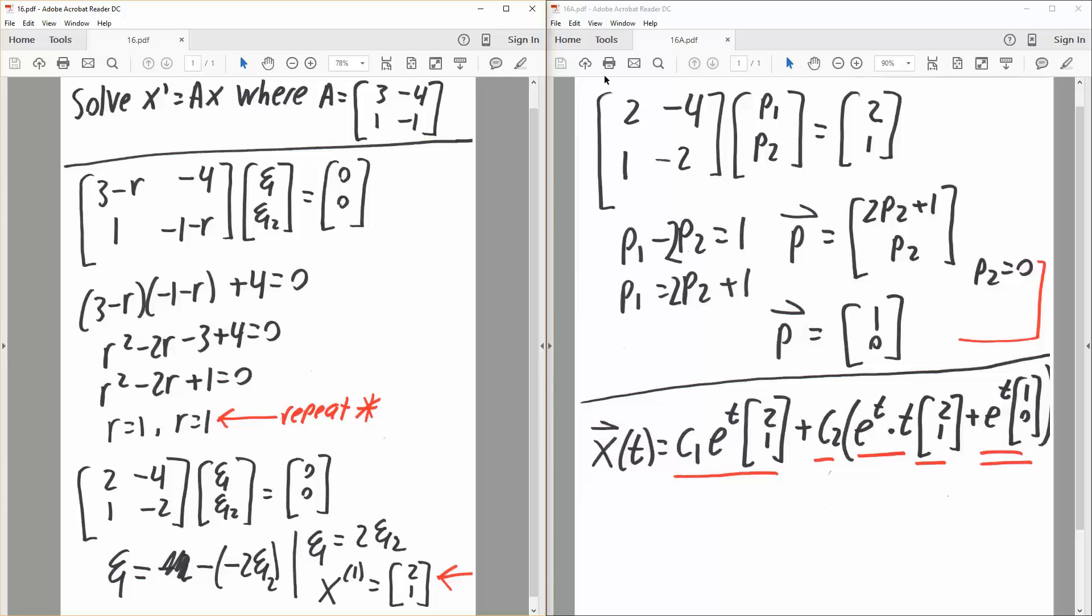And like we did last time, if you notice that this row right here is just double of this row. So 1 times 2 is 2, negative 2 times 2 is negative 4, 1 times 2 is 2. And so to make our lives easier, we can say 1 times p1 minus 2 times p2 is equal to 1.